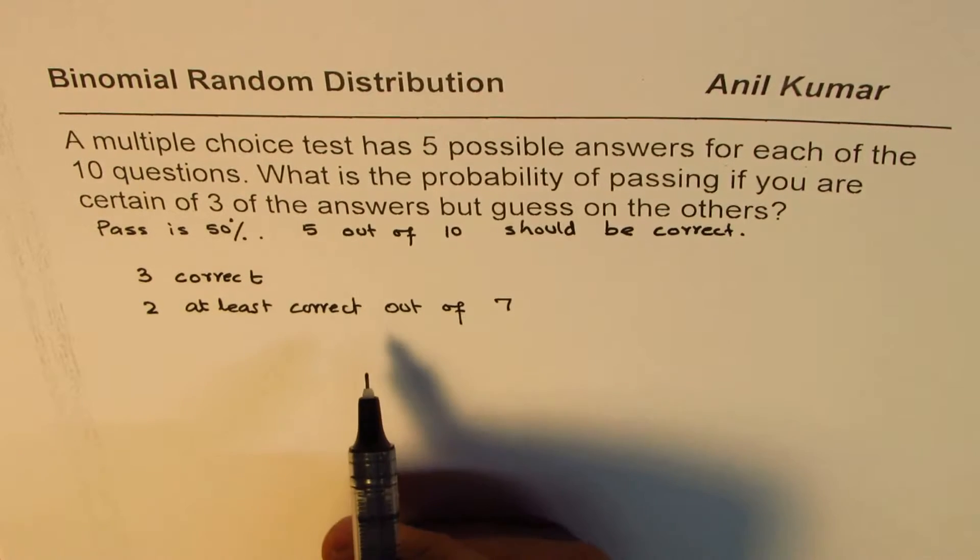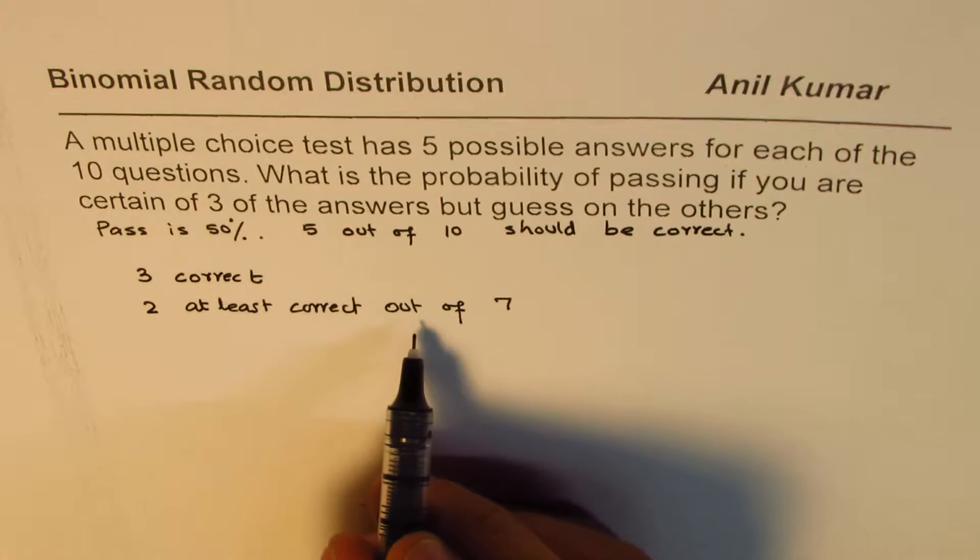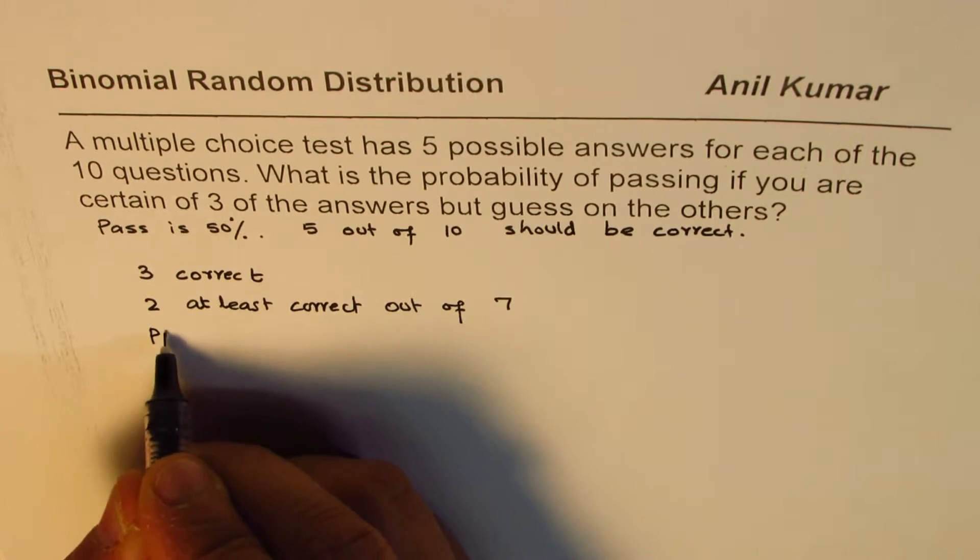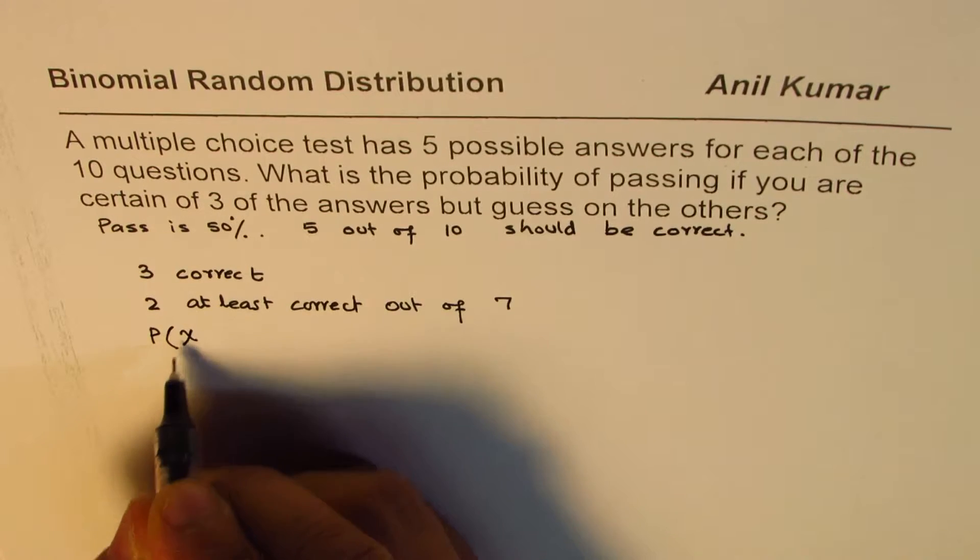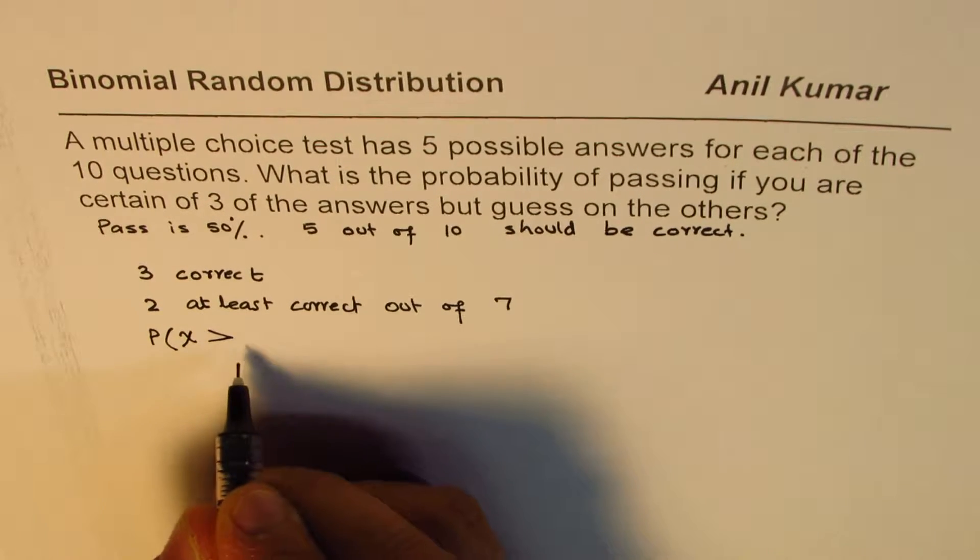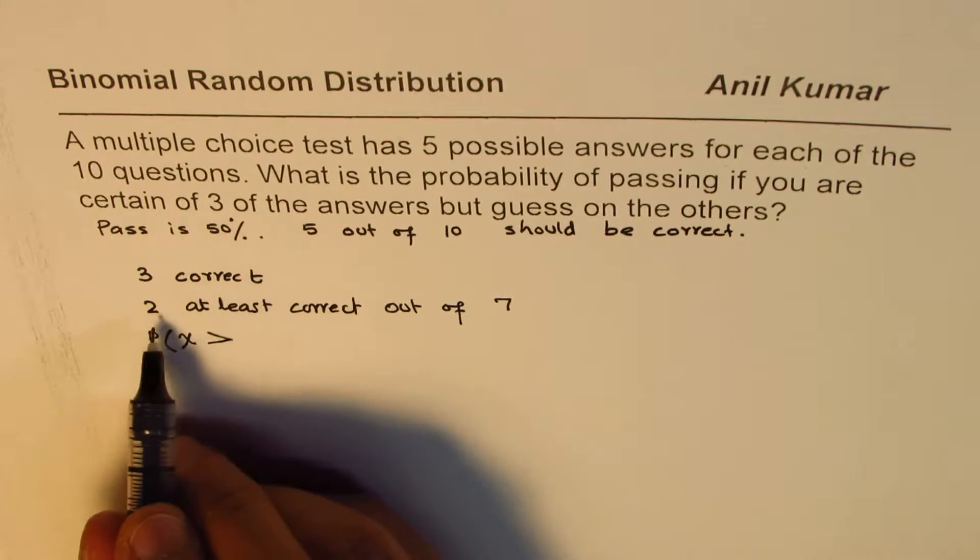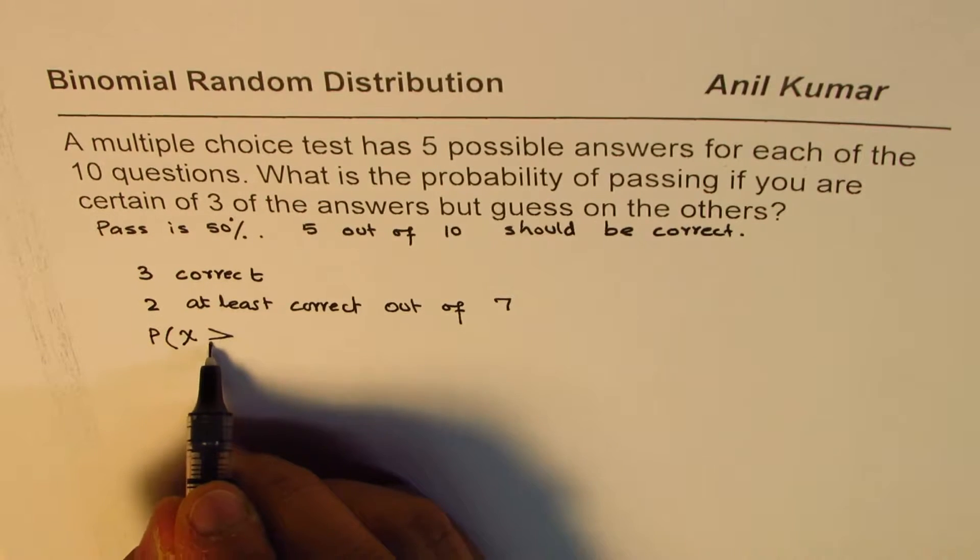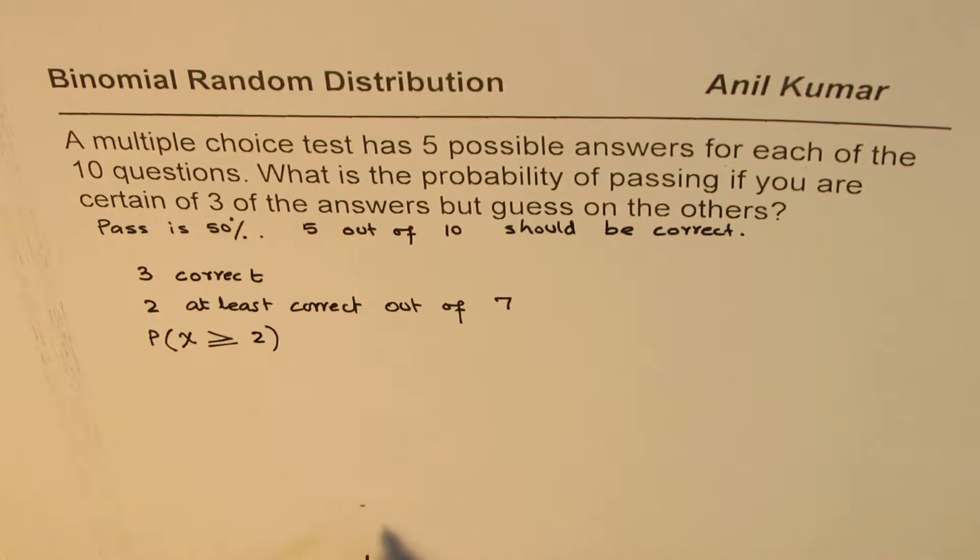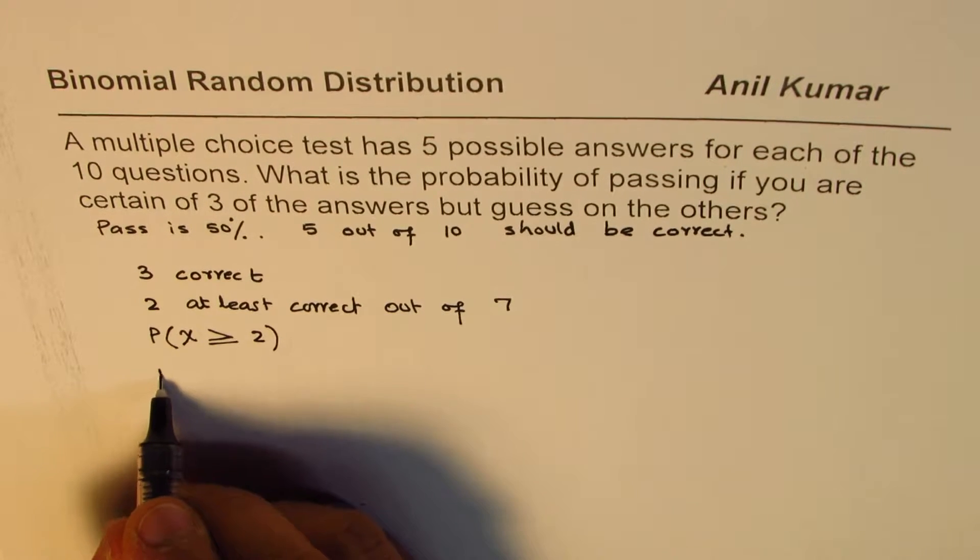So on the other side, it is better to use the complement. So when we say probability, we are saying this is to say probability that the random variable has possibility of at least 2, so greater than equals to 2. This is what we are looking for.